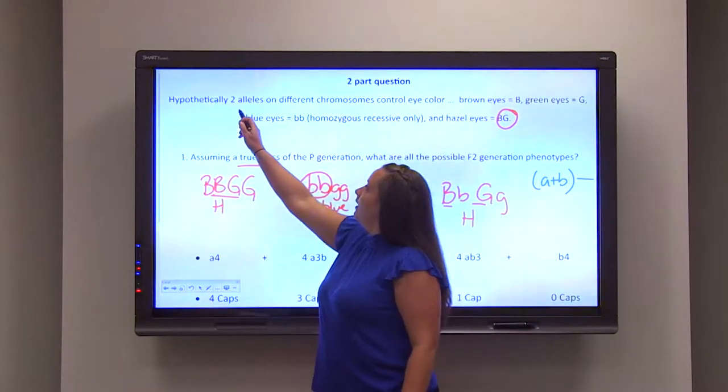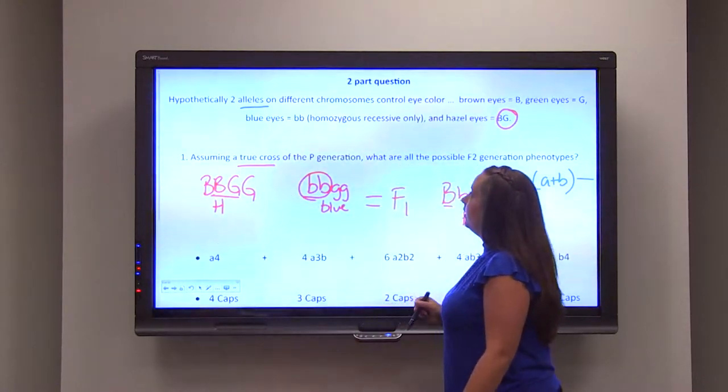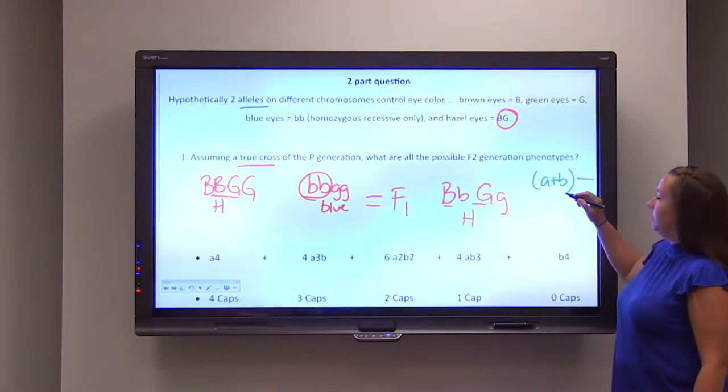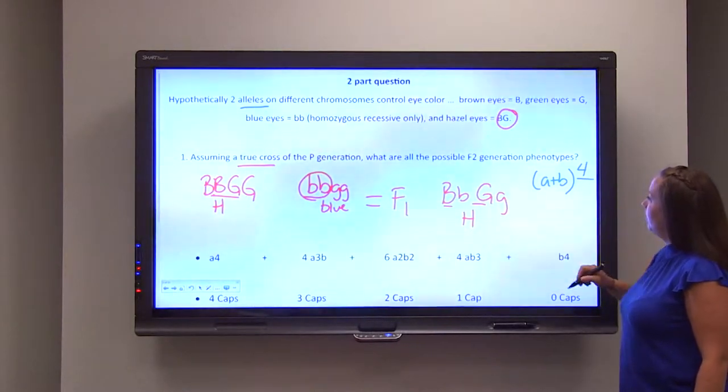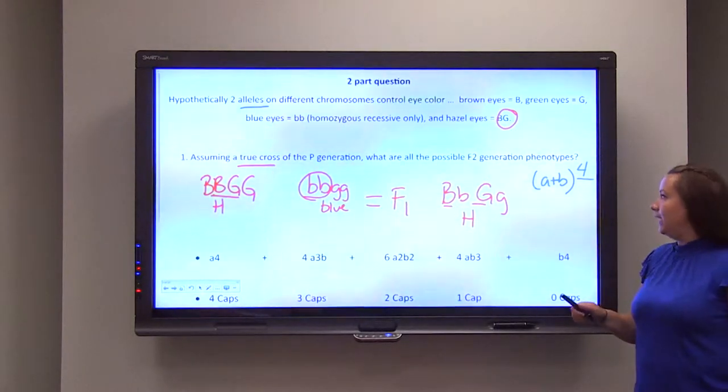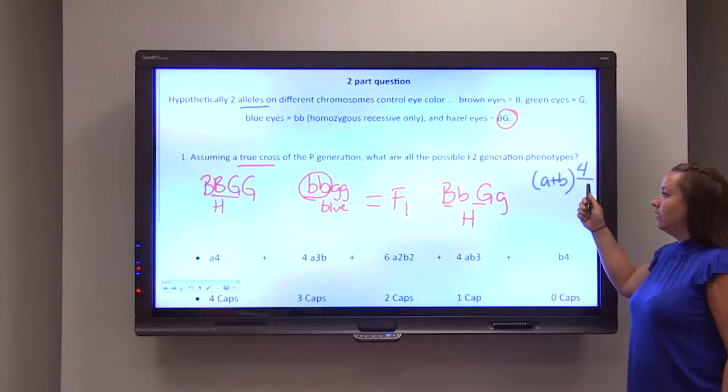So two alleles, we have two copies of each allele. Two times two is four. So our binomial expansion will be A plus B to the fourth power.